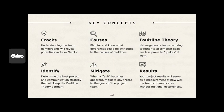Mitigate: when a fault becomes apparent, mitigate any threat to the goals of the project. Results: your project results will serve as a measurement of how well the team communicates without frictional occurrences.